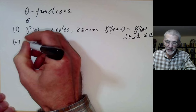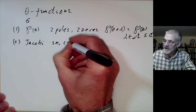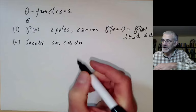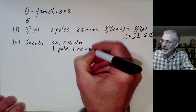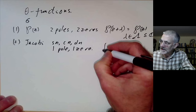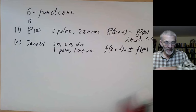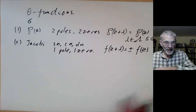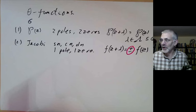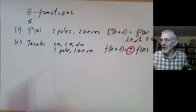Then in another lecture, we talked about the Jacobi elliptic functions, which were sn, cn, and dn. In a fundamental domain these had one pole and one zero, except they're not quite periodic — they satisfy f of z plus lambda equals plus or minus f of z. So they're sort of periodic up to this extra fudge factor, and this is the price we pay for having just one pole and one zero instead of two. We lose periodicity.